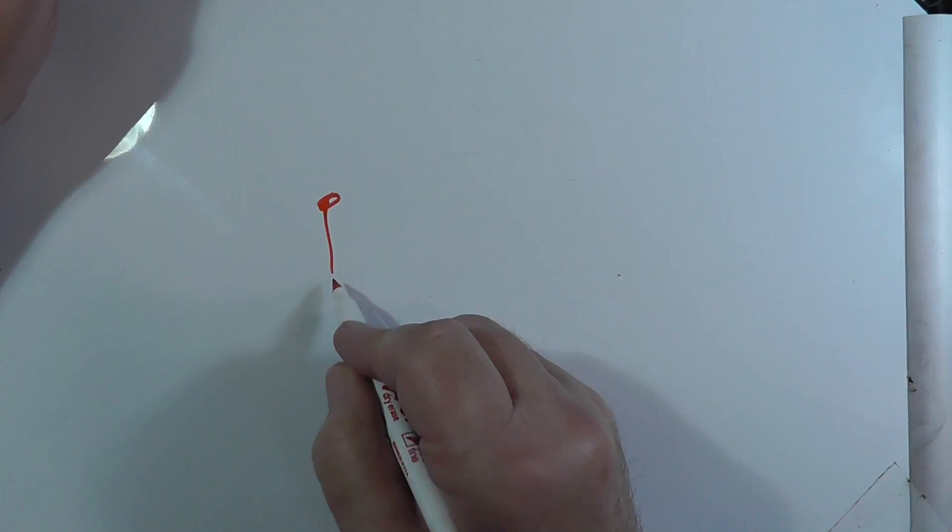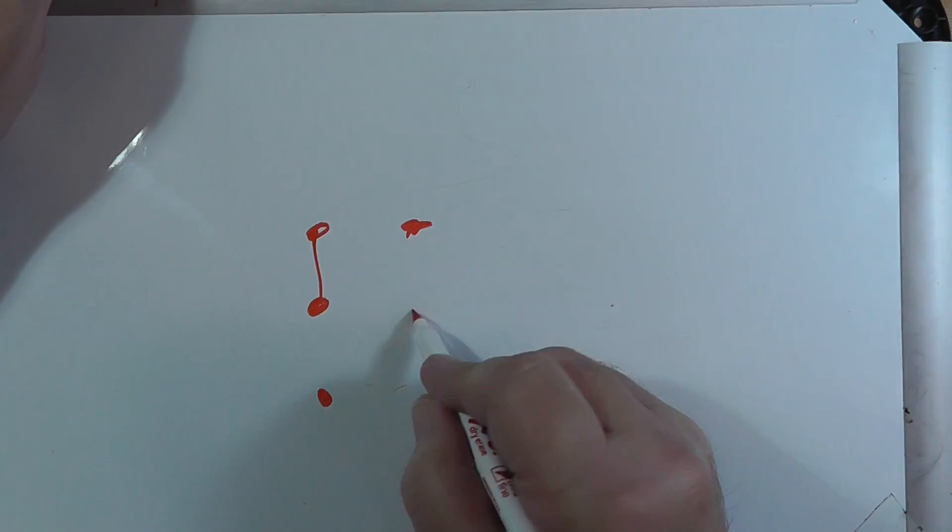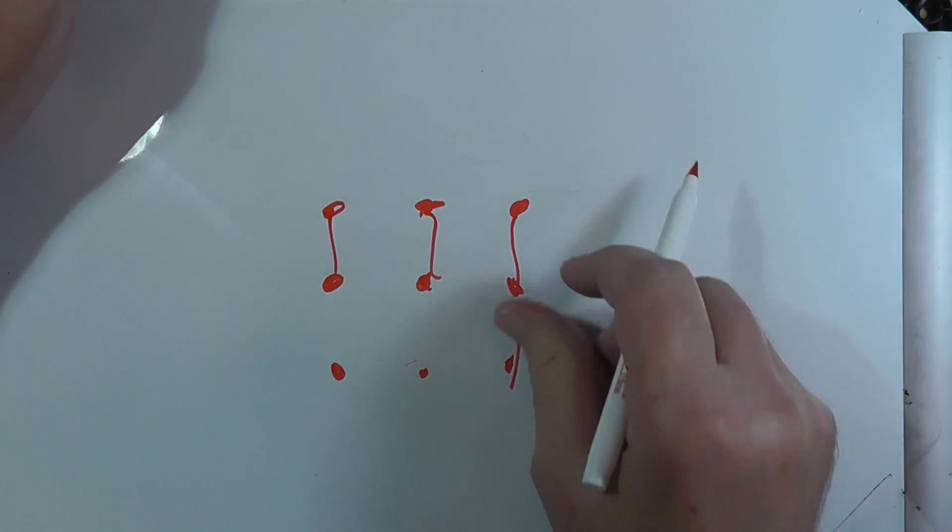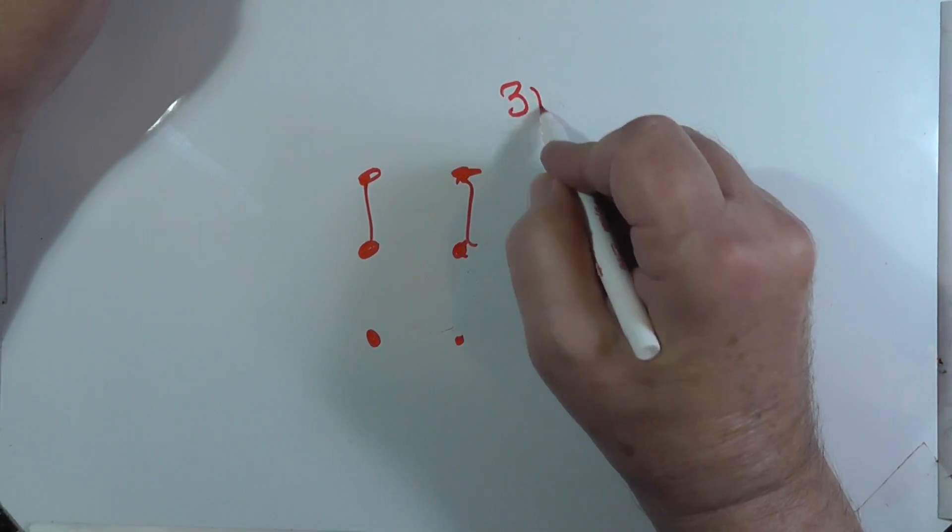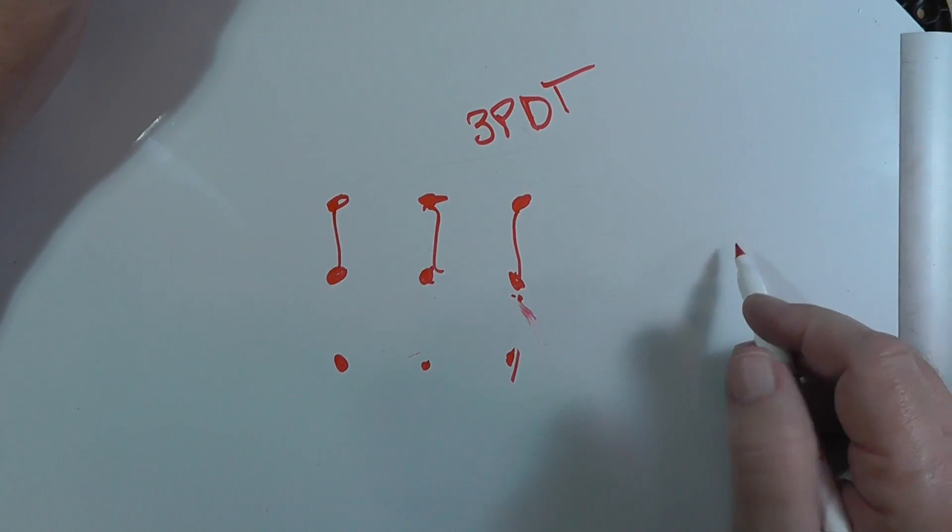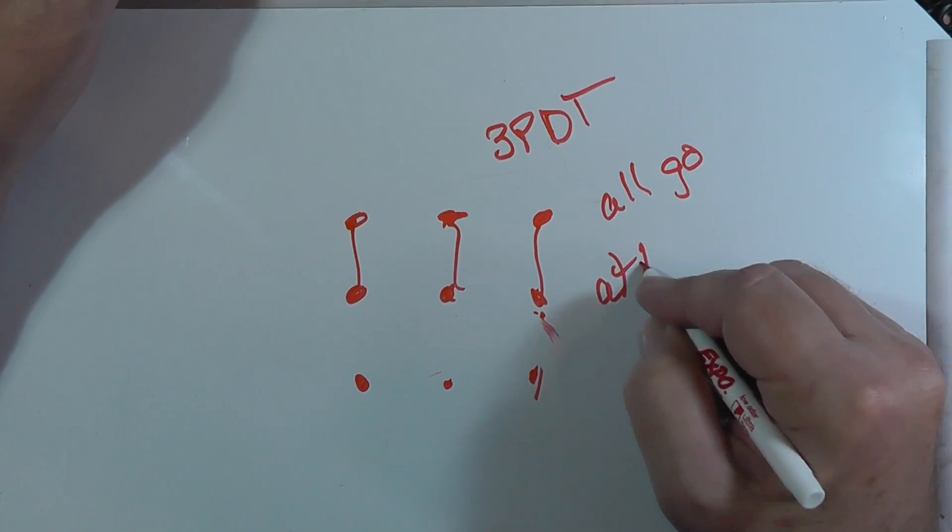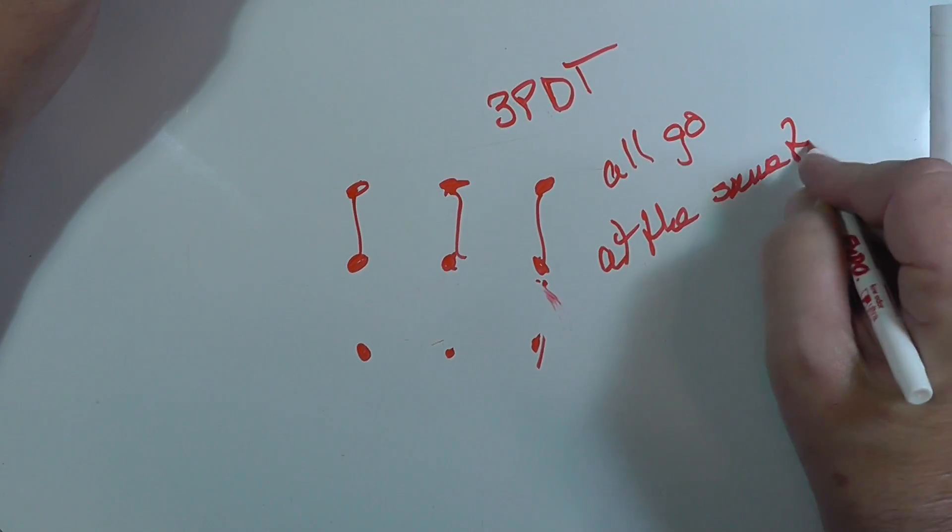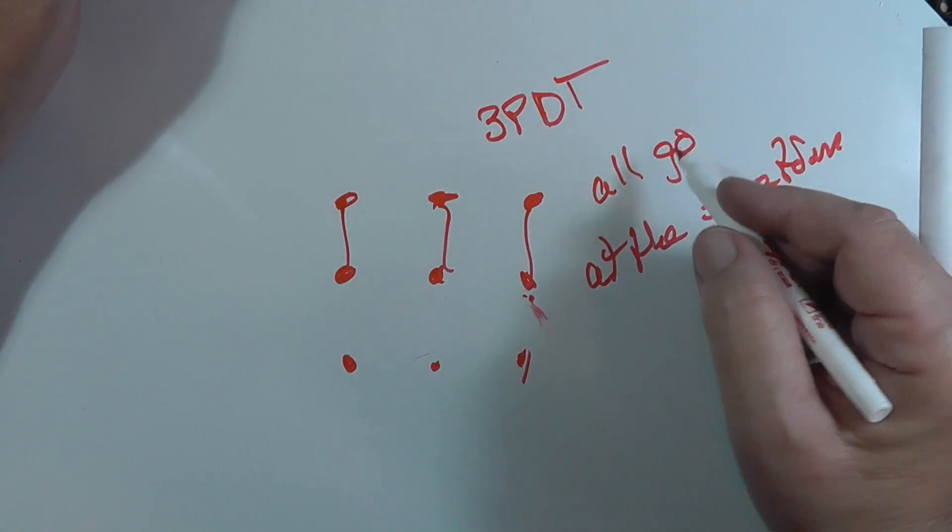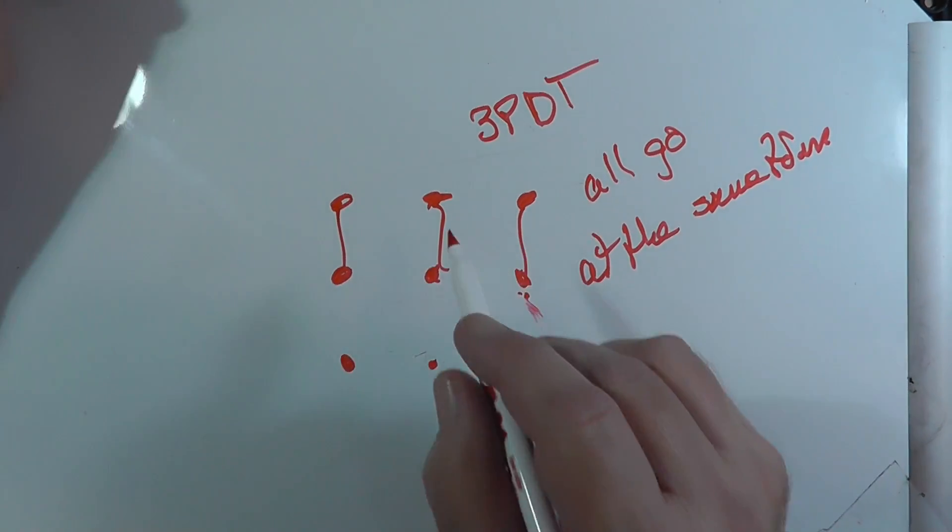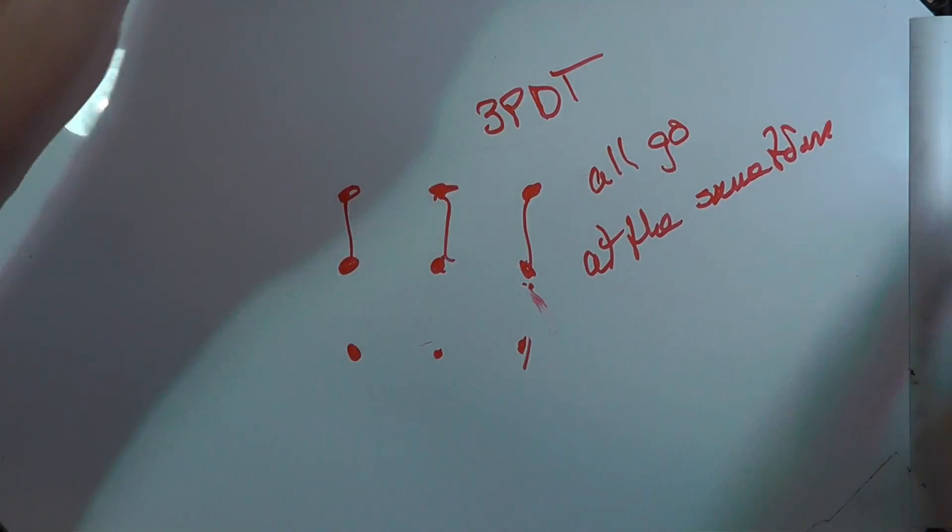You can get, although they're harder to get. Oops. These are triple pole, double throw. But the point of this is that they all go at the same time. All this goes to this. Now, if you can control each of these independently, you don't have the three pole double throw, you have a switching network and you can do what you want.